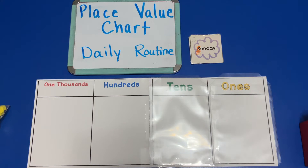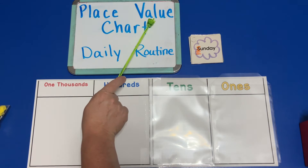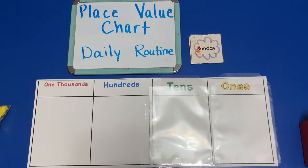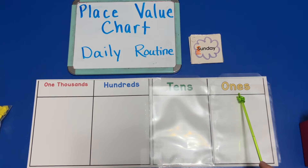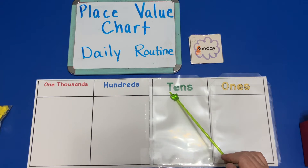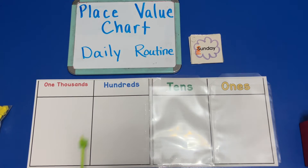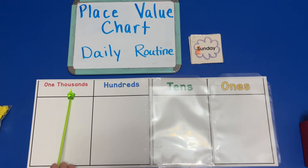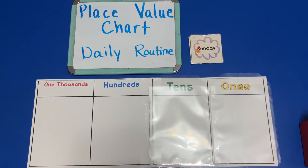When you look at a place value chart, you'll always have ones on the far right side — that might be all you have at first. Next to the ones place is the tens place, next to that is the hundreds place, and after that comes the one thousands place, then ten thousands and hundred thousands, but we won't go that far today.